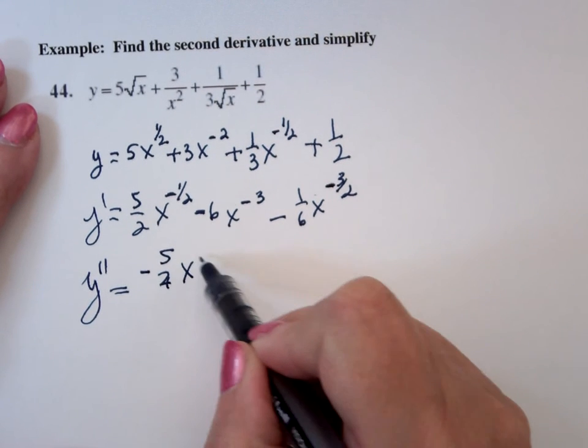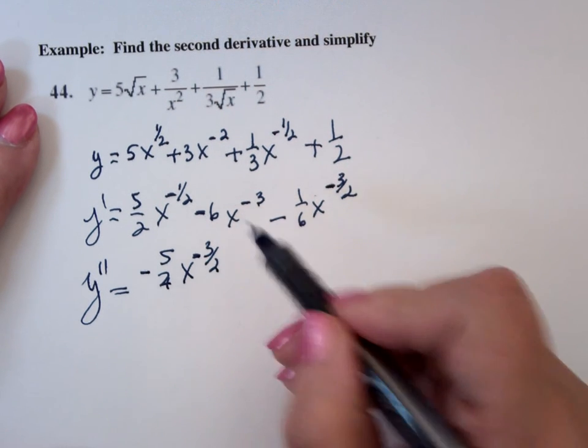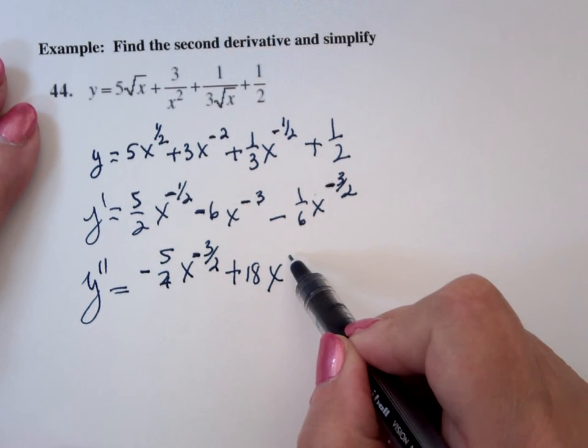x to the -3/2, -3 times -6 is plus 18x to the -4.